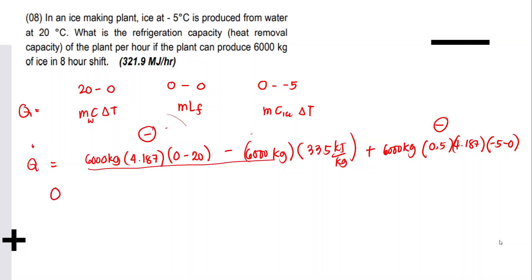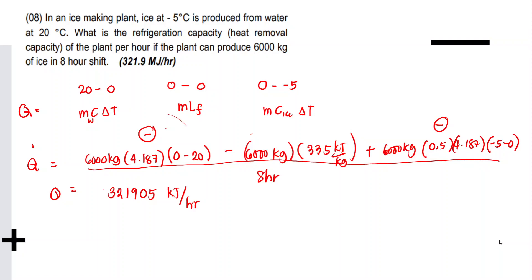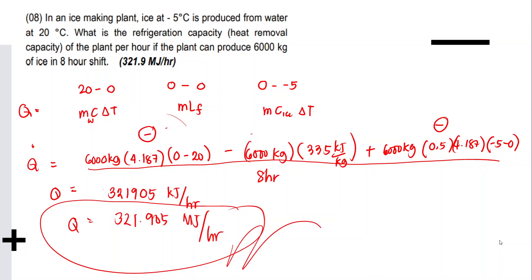Divided by an 8-hour shift, the answer is equivalent to 321,905 kJ/hour, or equivalently 321.905 MJ/hour. That is our final answer.